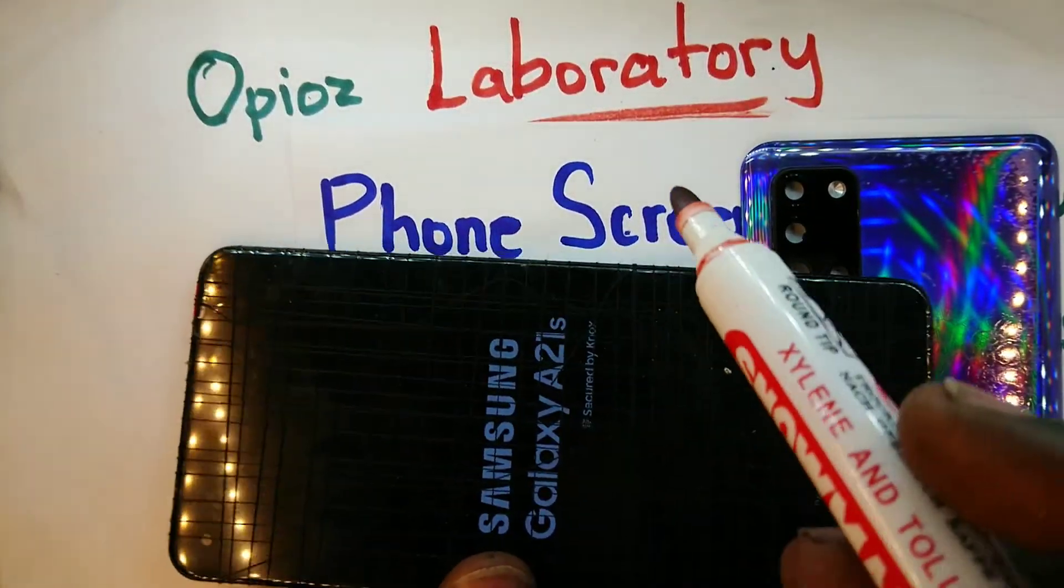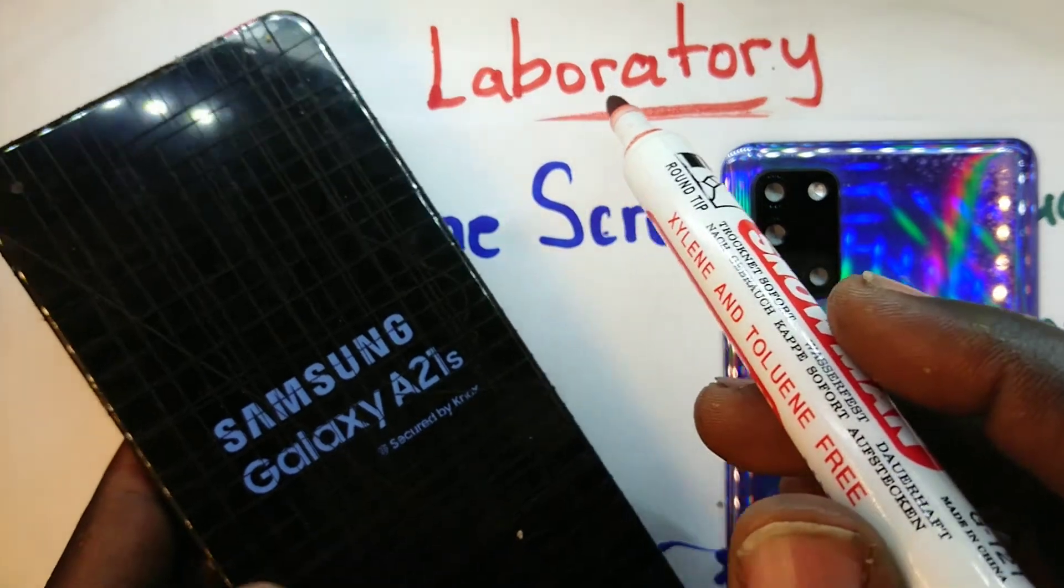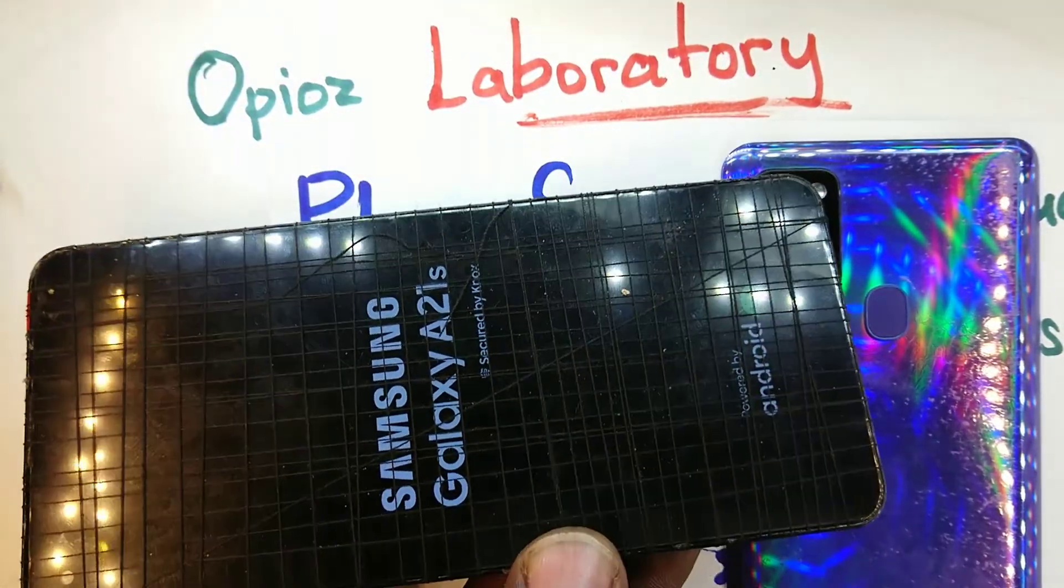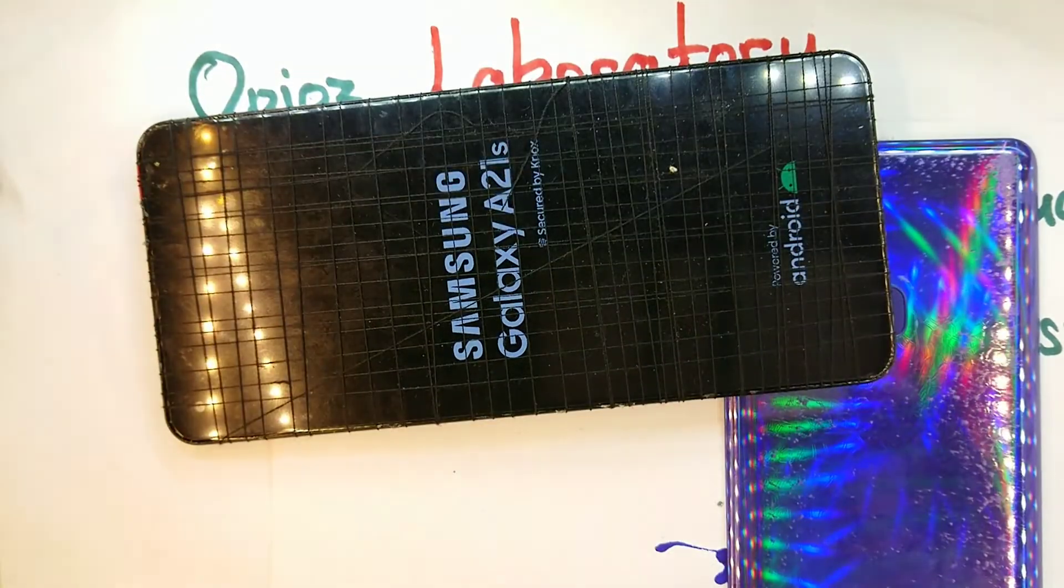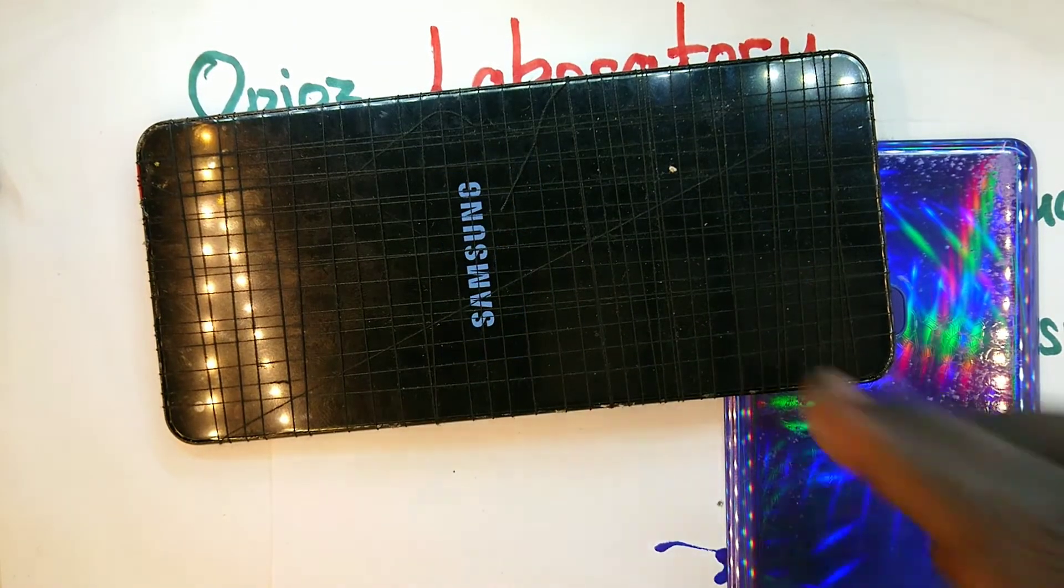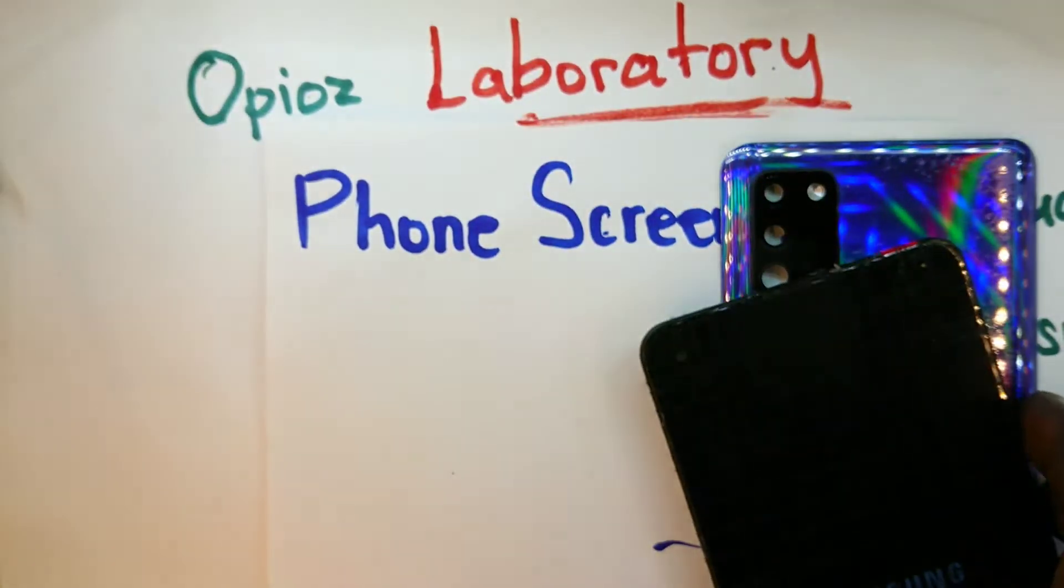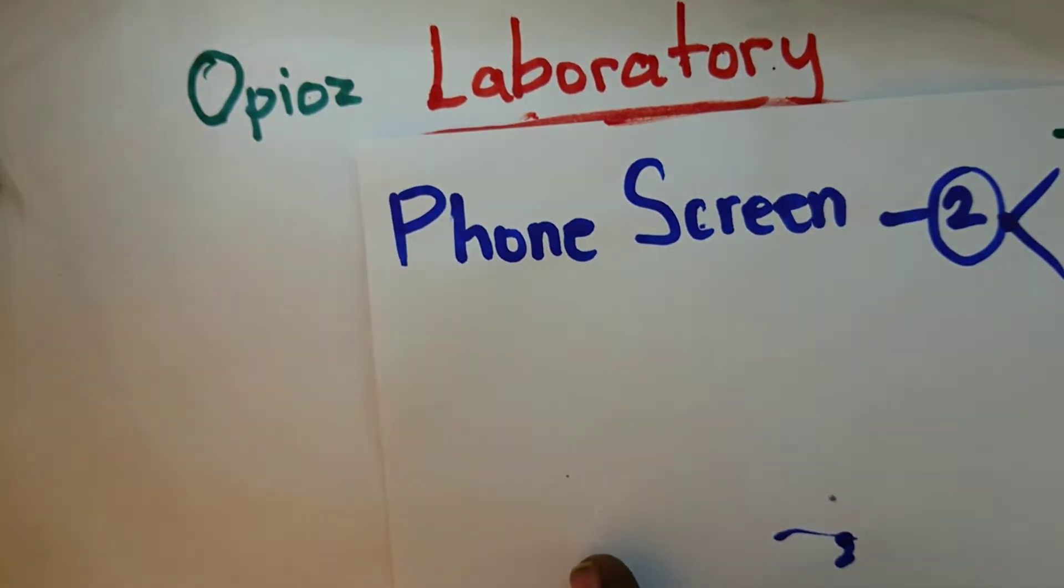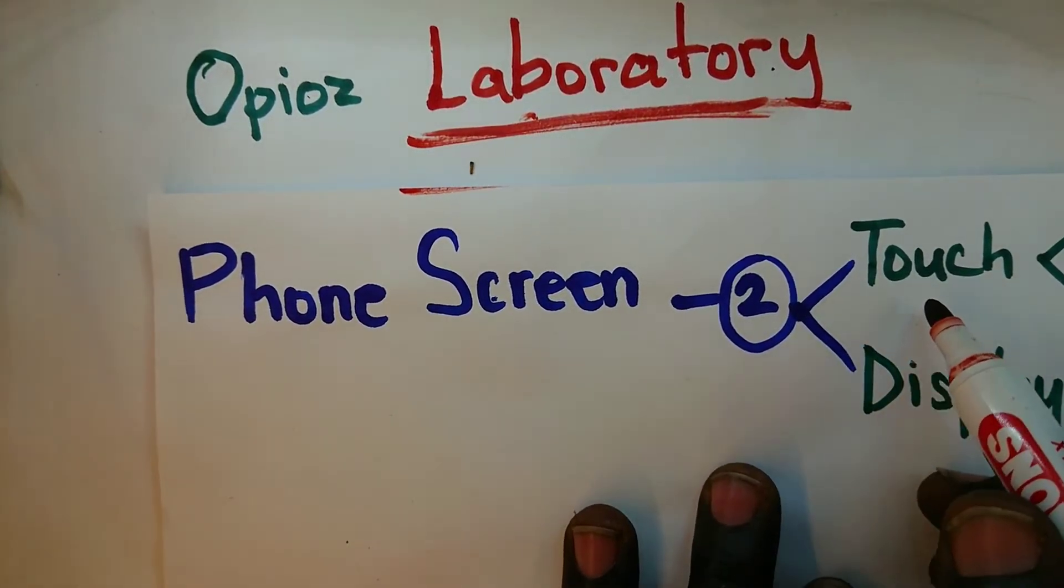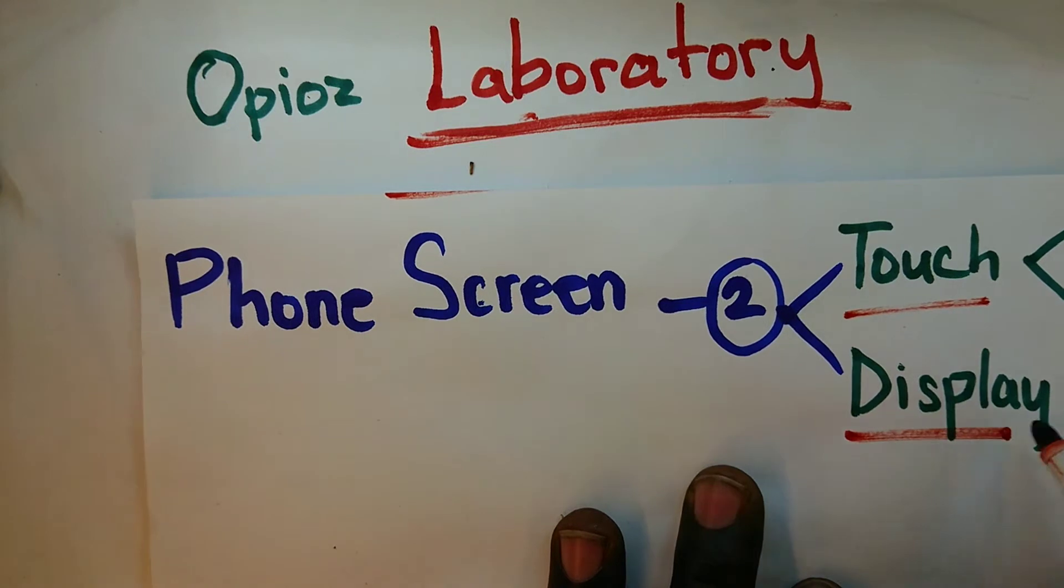So on Sunday we repaired a Samsung A21S that had a problem with the screen, and so I thought I should come and review a few concepts that are involved when it comes to phone screens. Now, when you look at a phone screen we are simply talking about two things. One, it is made up of the touch and of the display.